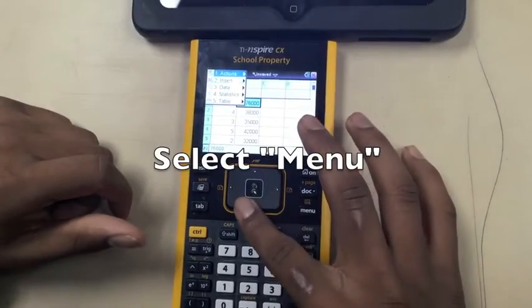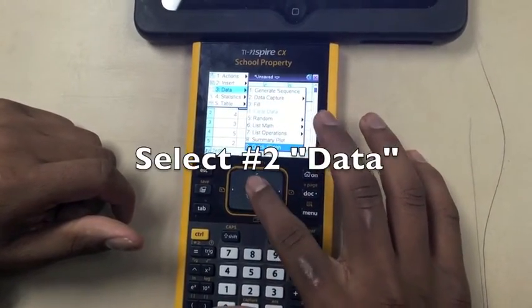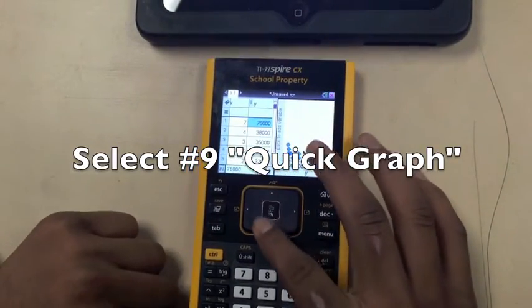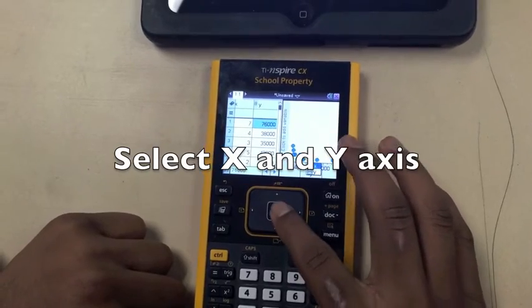Then I select menu, then data, then click graph. Then I select the x and y axis.